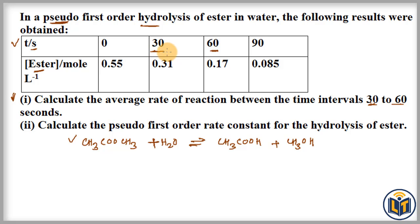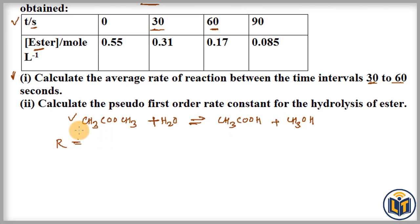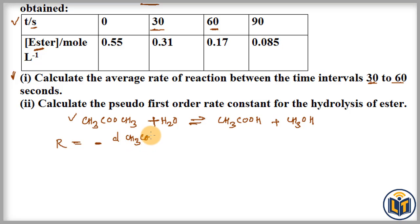We apply the formula for the average rate of reaction — that is, the change in concentration of the reactant per unit time. Rate is equal to the change in concentration of the reactant (ester CH3COOCH3) divided by the change in time (ΔT). When a chemical reaction takes place, the concentration of the reactant decreases, and this decrease is represented by a negative sign.